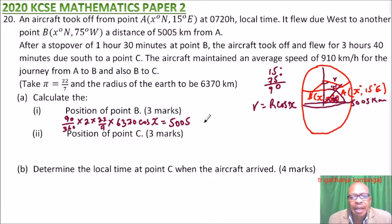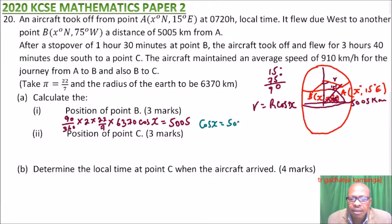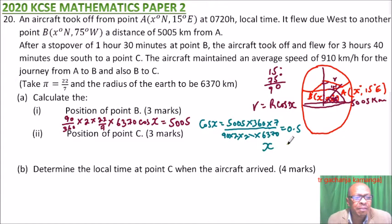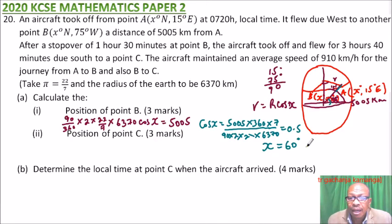Computing this, we rearrange to find cos(x) = (5005 × 360 × 7) / (90 × 2 × 22 × 6370), which gives cos(x) = 0.5. Taking the inverse cosine, x = 60 degrees. So the latitude is 60 degrees north, which means the position of B is 60 degrees north, 75 degrees west. That earns 3 marks.